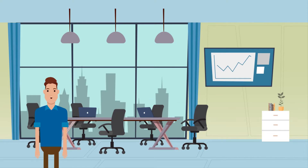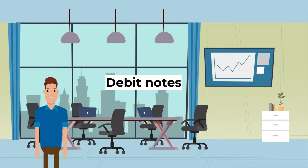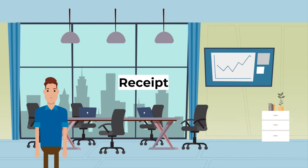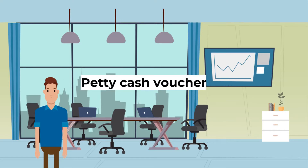Let's go through a list of business documents and their uses. Firstly, invoices — these prove or record credit purchases and sales. Next, credit notes — this records the returning of goods by credit customers or to credit suppliers. Debit notes — this is when an original invoice to a credit customer or from a credit supplier is undercharged. Receipts — this records cash purchases and sales and acknowledgement of payment.